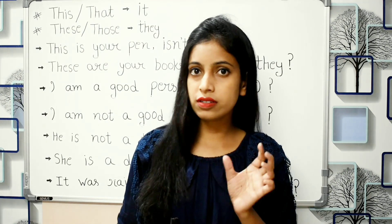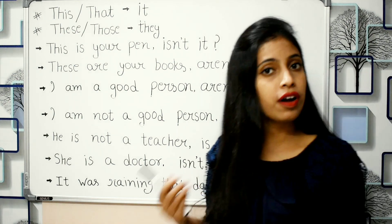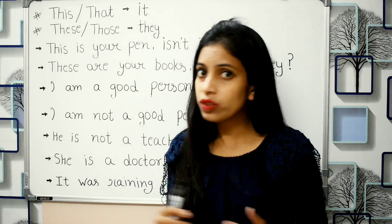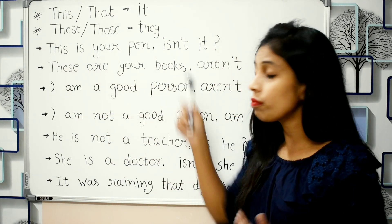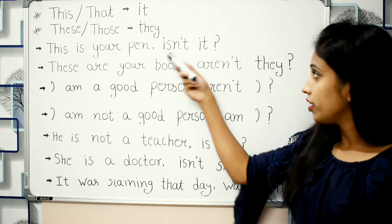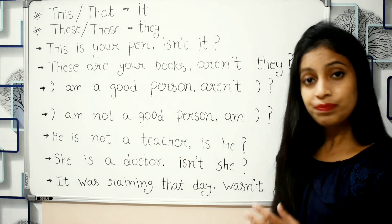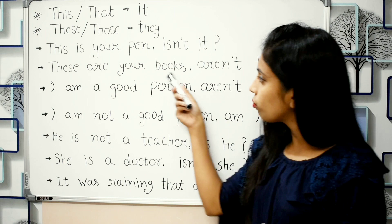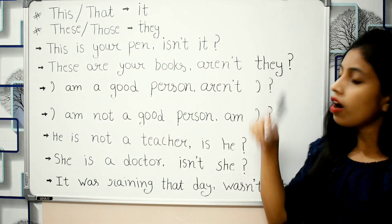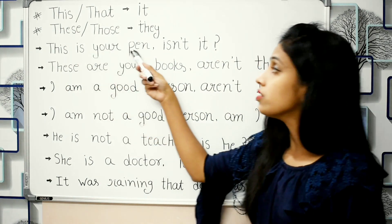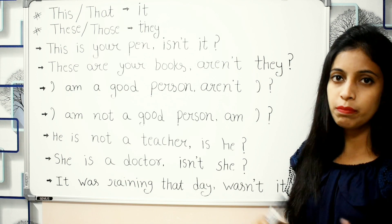Friends, if our sentence starts with 'it', then the question tag also uses 'it'. But if our sentence starts with 'these' or a plural subject, then we use 'they' in the question tag. For example: 'This is your pen, isn't it?' — and 'These are your books, aren't they?' Simple.